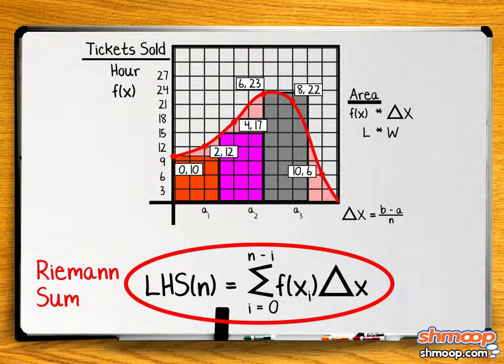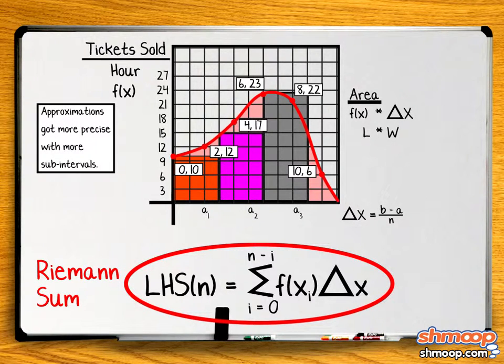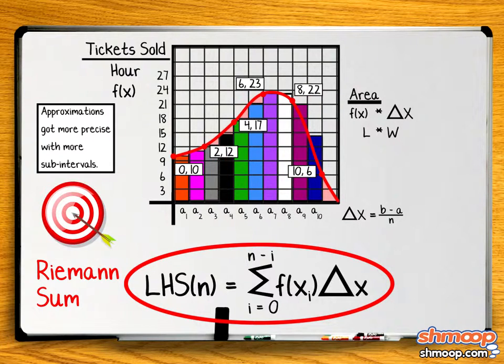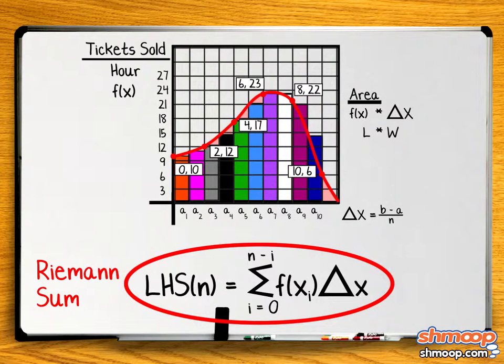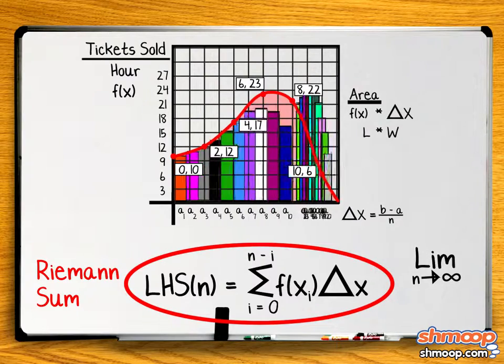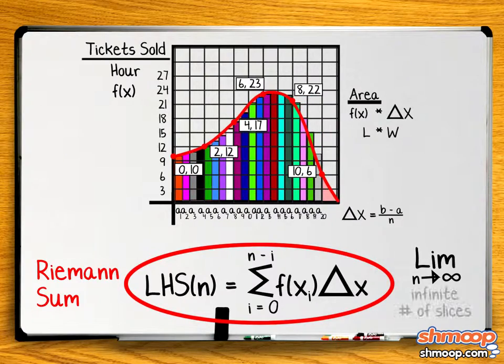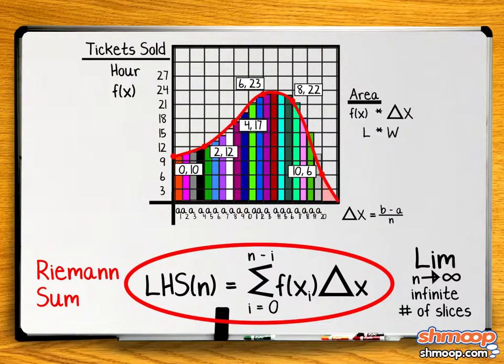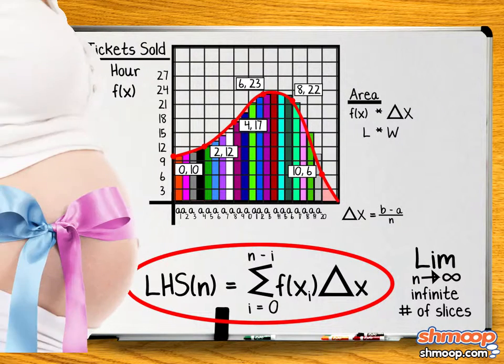Yeah, that's the one. Remember how we said that the approximation got more precise with more subintervals? Well, let's take this to the extreme and see if we can go from more and more intervals to an infinite number of intervals. We can take the limit of our Riemann sum as n approaches infinity, giving us an infinite number of slices. This will give us an exact approximation of the area under the curve. Notice we say exact approximation. It's like being a little bit pregnant.